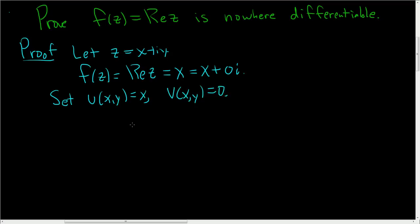So now we'll check. We'll take the partial derivatives and we'll check the Cauchy-Riemann equations. If they don't hold, then we're done and the function is nowhere differentiable. So del u del x, that's equal to 1. Then del u del y is equal to 0. Let's see, del v del y, that's equal to 0.